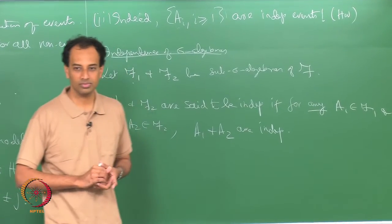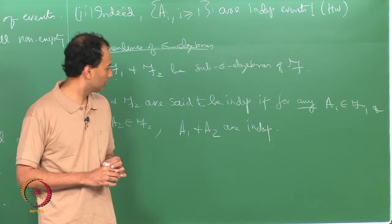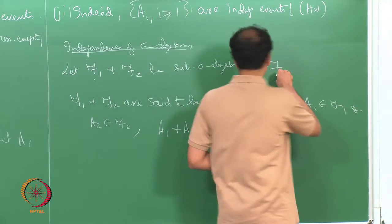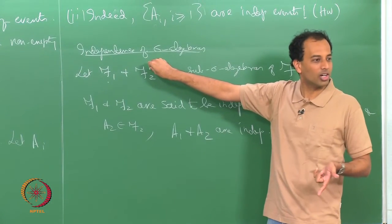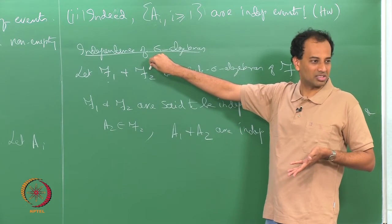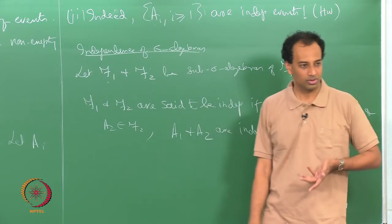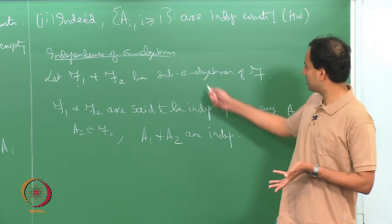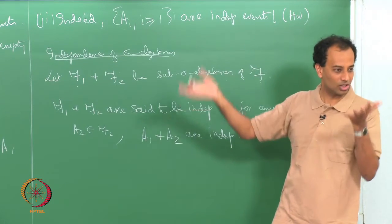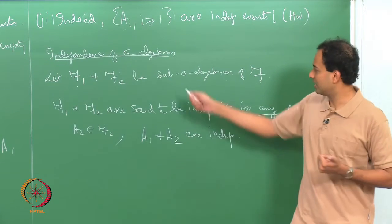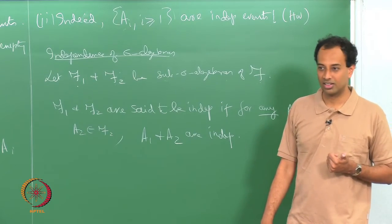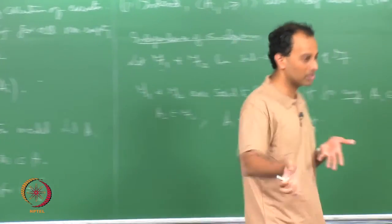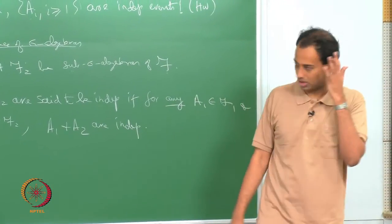No matter which event you pick from F_1 and which from F_2, those two events must be independent. If it is true for every such A_1 from F_1 and every A_2 from F_2, then F_1 and F_2 are independent sigma algebras. If you happen to pick ∅ or Ω it will trivially hold, but for the remaining events independence must hold. P is defined on F, and since F_1 and F_2 are sub-sigma algebras, P is also defined on their elements — this is why we require sub-sigma algebras.